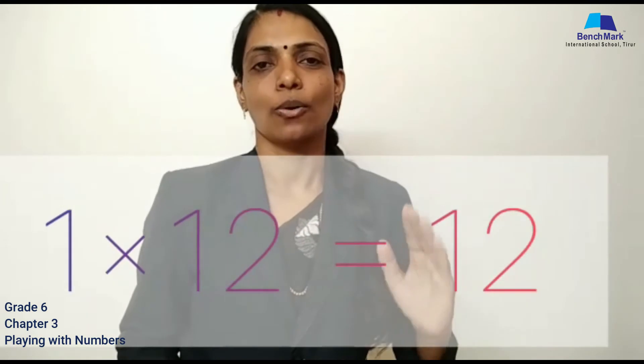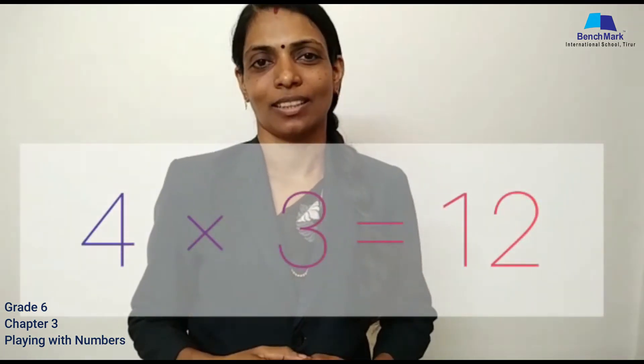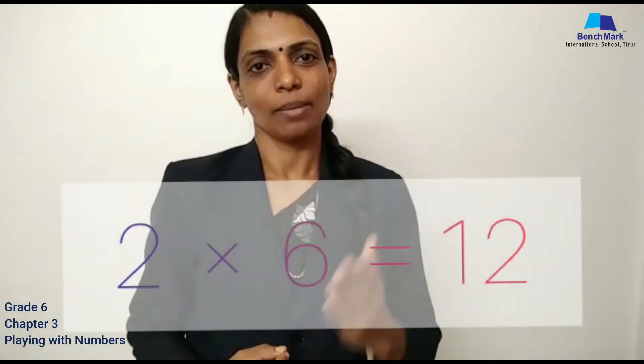Let's take another example — the number 12. Let's check the possibilities of getting 12 as a product of 2 numbers. The first possibility is 1 times 12. Then 4 times 3, and 2 times 6. So let's arrange the Factors of 12 in order: 1, 2, 3, 4, 6, and 12 are the Factors of 12.